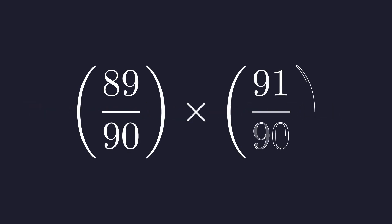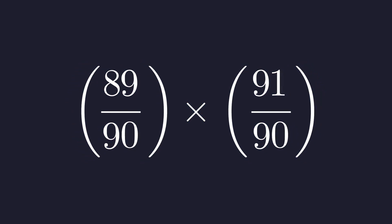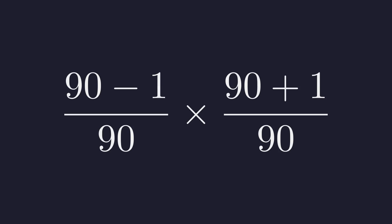Let's pair the term just below 1 with the term just above 1. There's a beautiful pattern here. We can rewrite the numerators relative to 90. This becomes (90 - 1)/90 times (90 + 1)/90. The numerators are now in the form A minus B times A plus B, which is the classic difference of squares formula: A squared minus B squared.